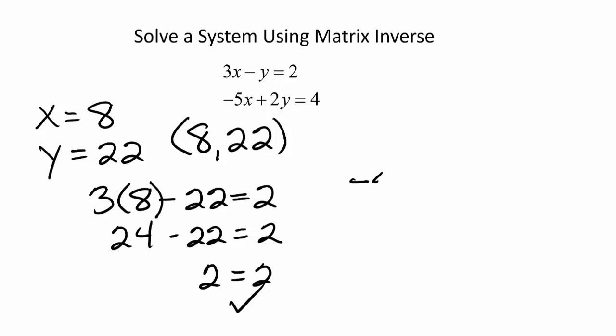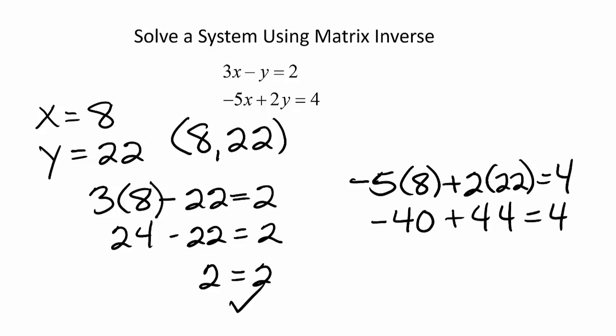Now let's try the second equation. We have negative 5 times 8 plus 2 times 22 equal to 4. That would be negative 40 plus 44 equals 4. Negative 40 plus 44 is 4, which equals 4. And that checks.